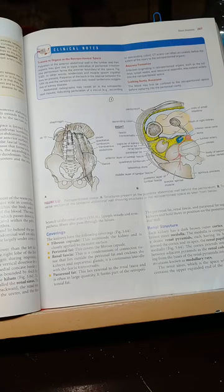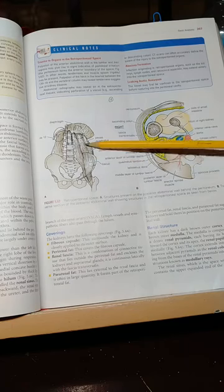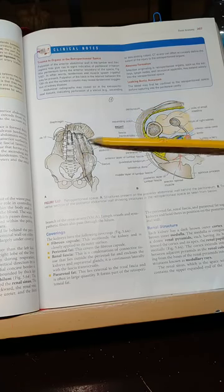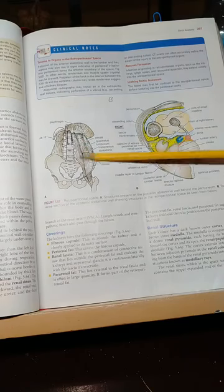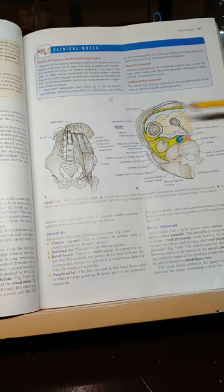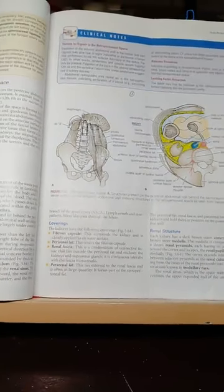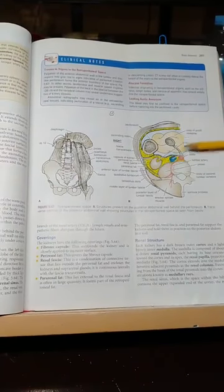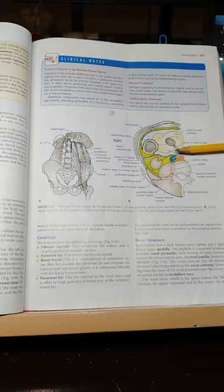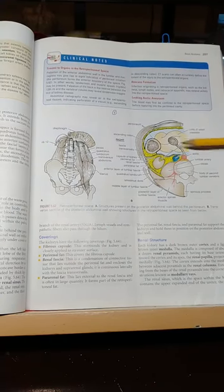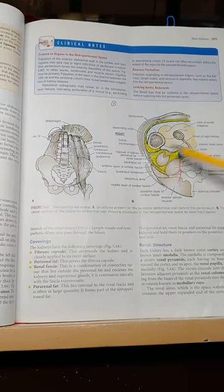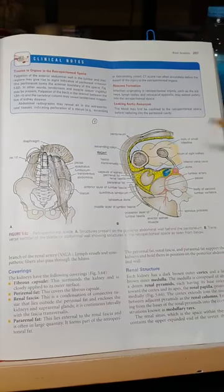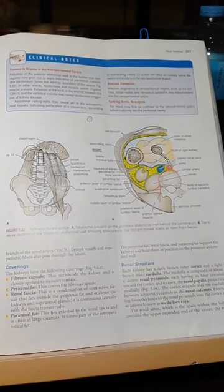To begin with, as a sort of review, this is the posterior abdominal wall. The structures that are found on the posterior abdominal wall are what we call the retroperitoneal structures. They are called retroperitoneal because only the anterior part of the organs are covered with the parietal peritoneum.